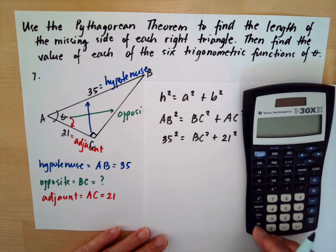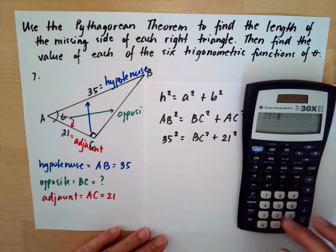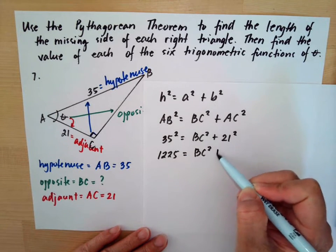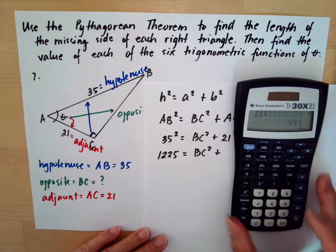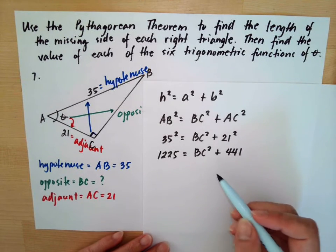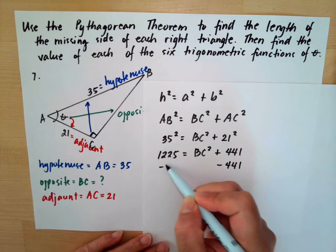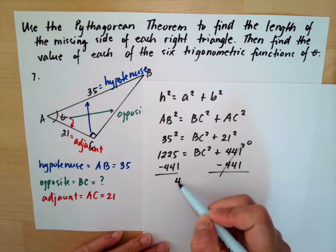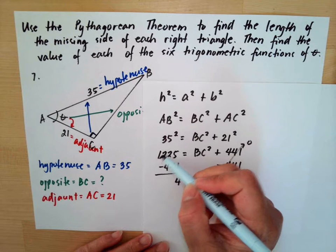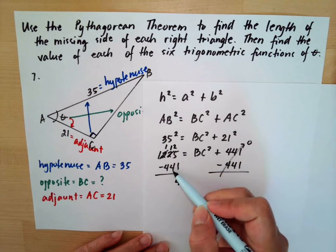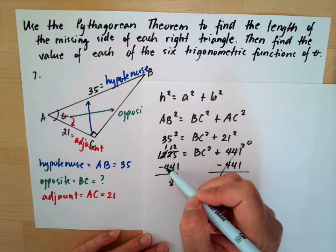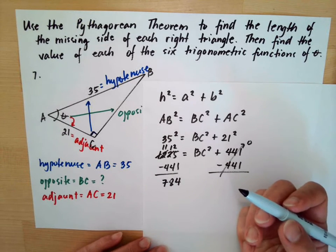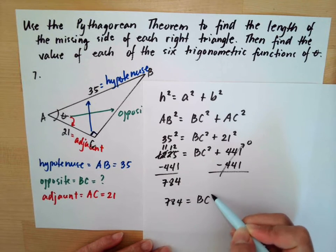35 squared equals 1225, and 21 squared equals 441. To solve for BC, we subtract 441 from both sides: 1225 minus 441 equals 784. So BC squared equals 784.